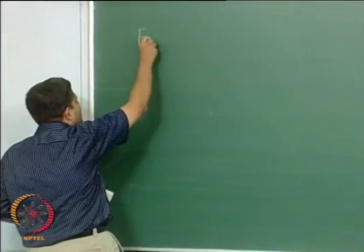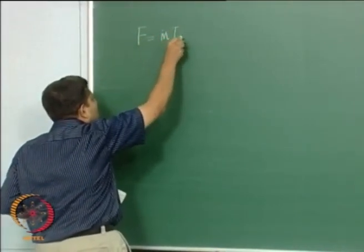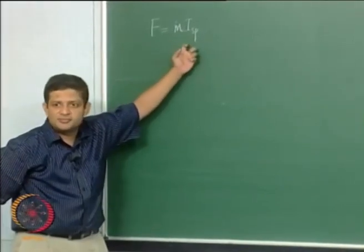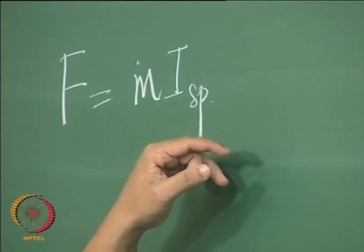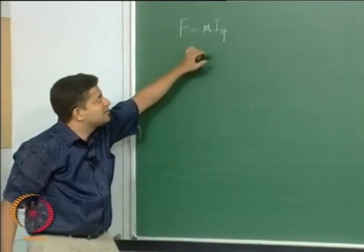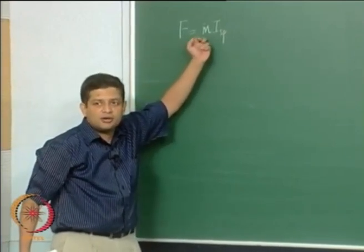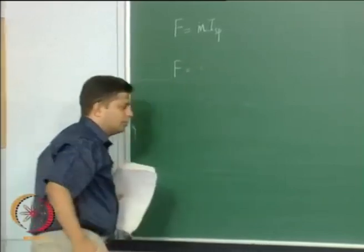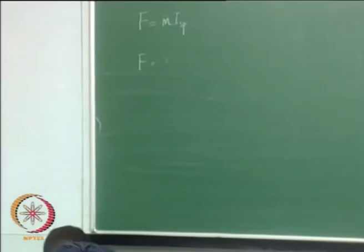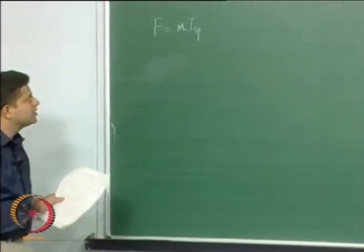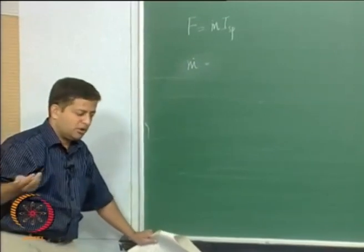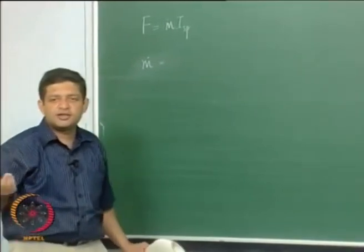Now, if you remember our thrust equation, we had written F = M-dot · ISP. Now, let us say I pick a propellant combination — then this ISP is fixed. So if I want to change the thrust in some sense, the only way I can do it is by playing around with M-dot. The mass flow rate is equal to ρ·A·V in a fluid; very similar here.